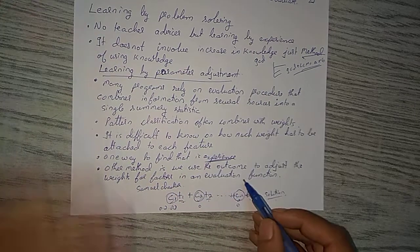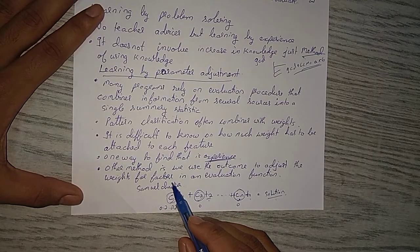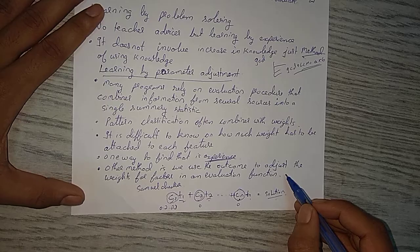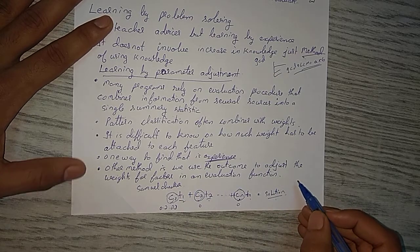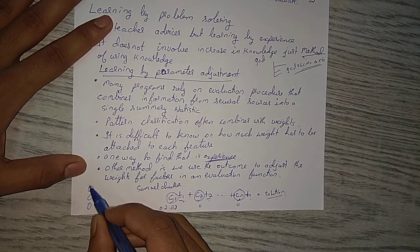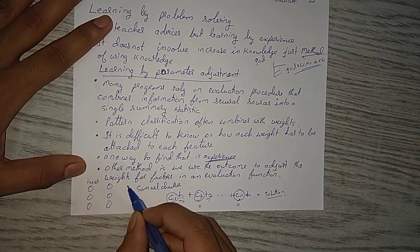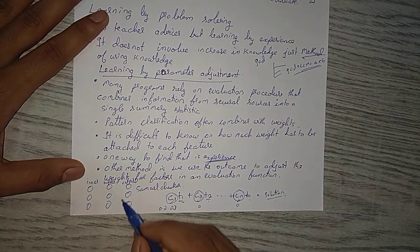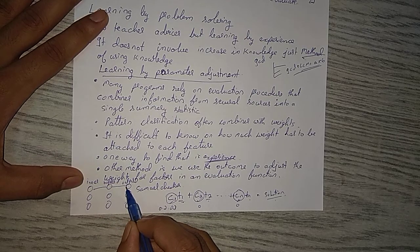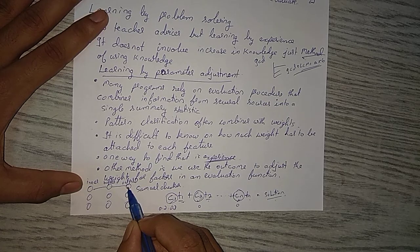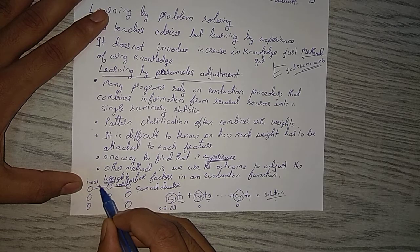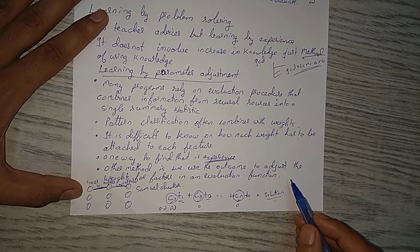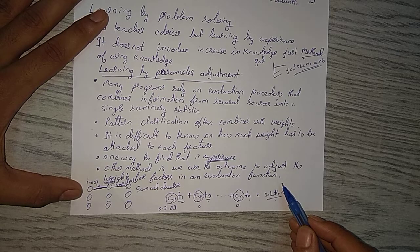The other method is to use the outcome to adjust the weight factors in an evaluation. This is the neural network perceptron method, and I will make a video on that. What happens here is you have an input layer, a hidden layer, and an output layer. After generating the output, if it is not correct, it uses the output to adjust the weights back through the layers. That's how this method works. Please don't forget to like, share, and subscribe. Thank you.